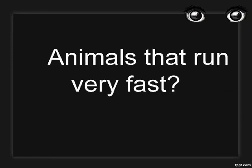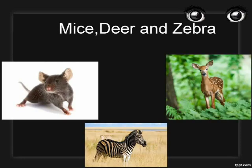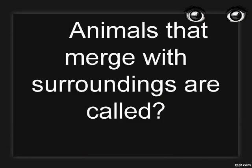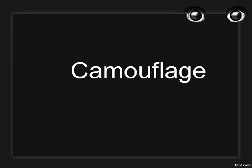Animals that run very fast include mice, deer, and zebra. Animals that merge with their surroundings are called camouflage.